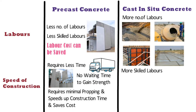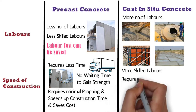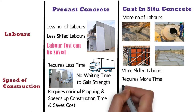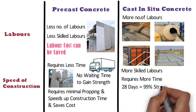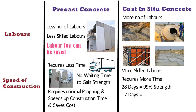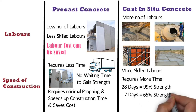Whereas cast in situ method of concreting requires more time, because concrete requires a minimum of 28 days to achieve 99% of its total strength. Thus, after creating one element, only after 7 days can a new element be created that is dependent on the previous one, as concrete achieves 65% of its total strength in 7 days.